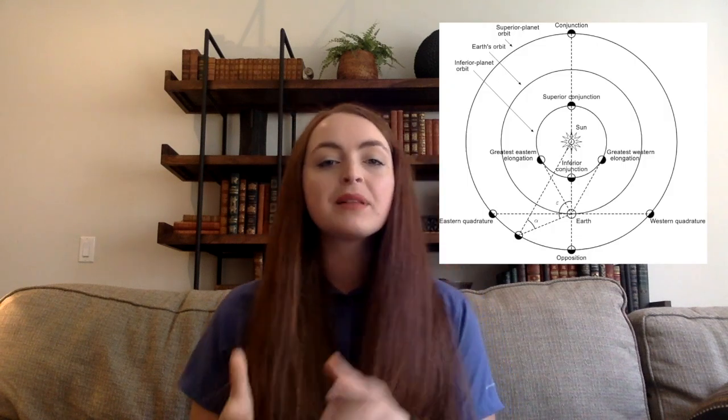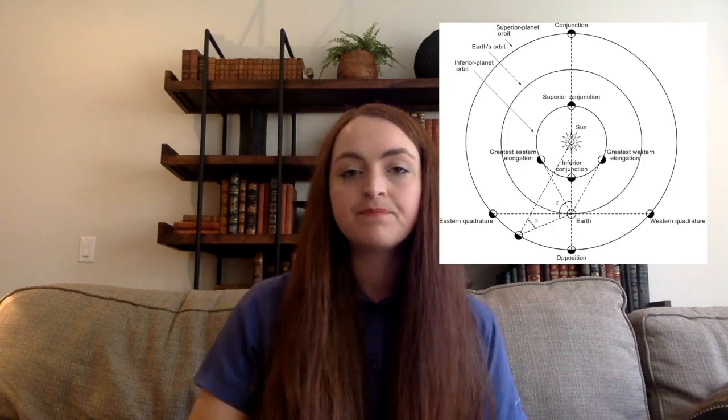But even though the Earth orbits the Sun and is round, since astronomers are observing from the Earth, these terms are still useful. They refer to the angle between a planet and the Sun in the sky.